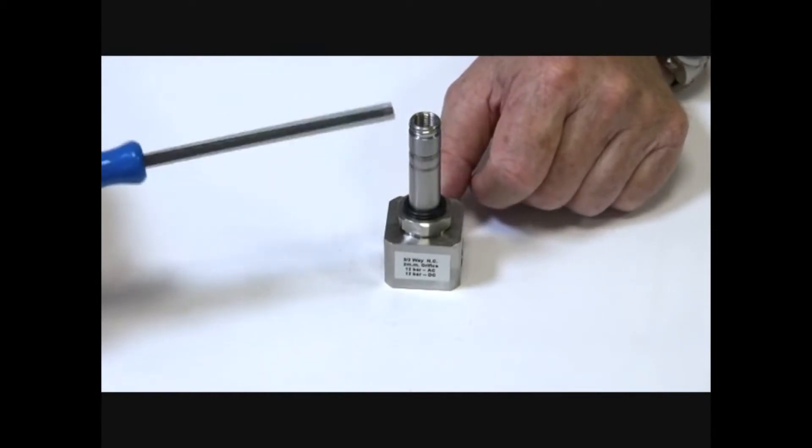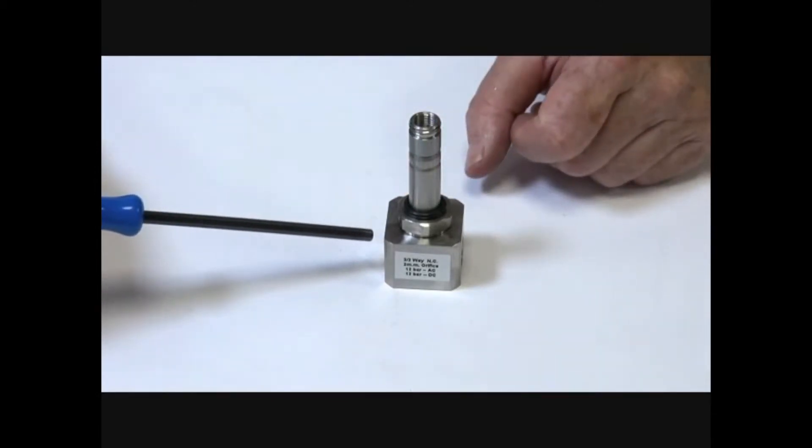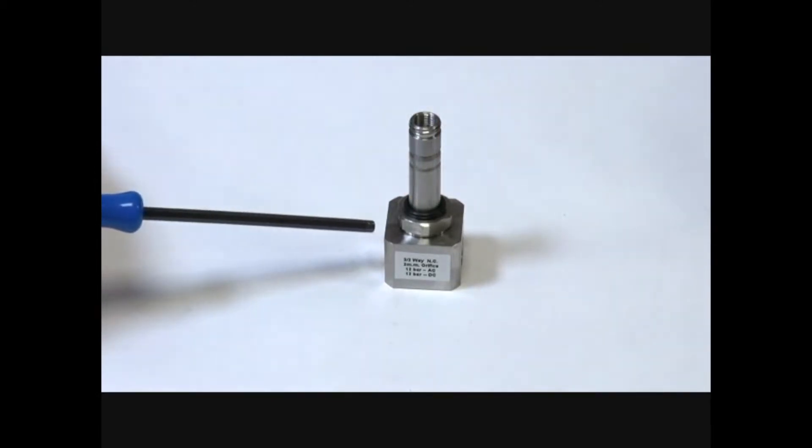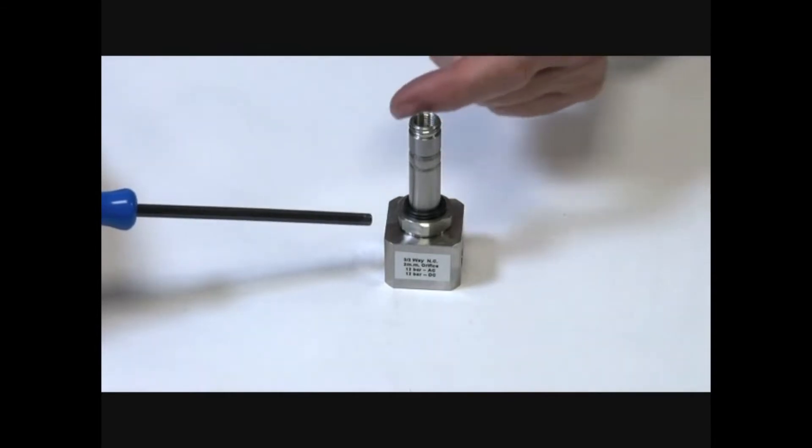When it's energised, the armature comes up, blocks off the top port, and you get port one and two connecting. Supply flows through when energised, and downstream exhausts through the top when de-energised.